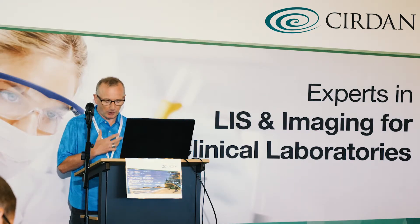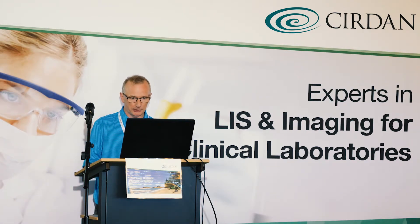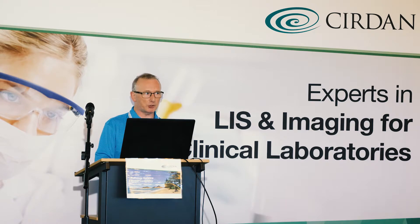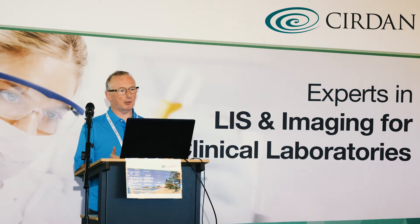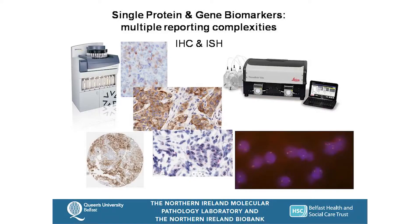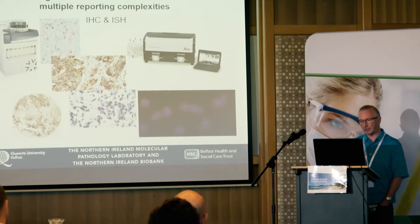We've also got to account for immunohistochemistry and in-situ hybridisation — but it's not simple, because we have single biomarkers with complex multiple reporting. We have a report such as ALK where it's either positive or negative, but something like HER2 can be 1+, 2+, or 3+, on a TMA or a whole section. In the case of HER2, a 2+ result needs to go for in-situ hybridisation — either chromogenic or fluorescent. The complexities of how these are managed and reported must be accounted for in any LIMS system.